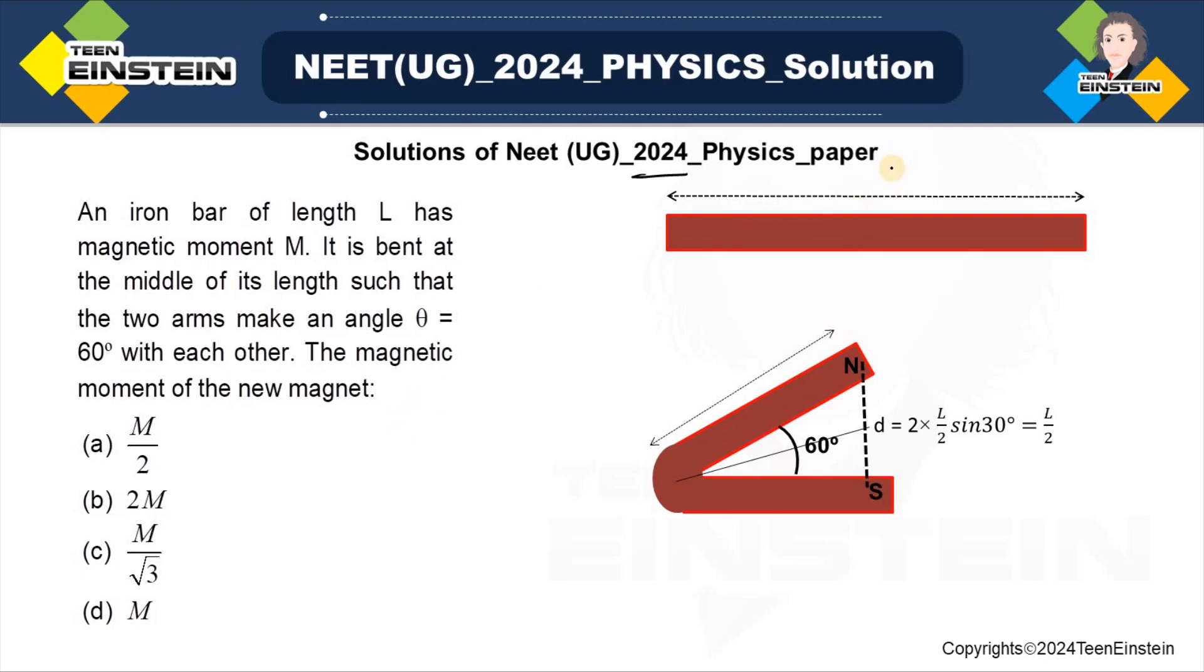So, suppose this is the iron bar having length L, and if I say the magnetic pole strength is small m which are situated at the ends of this bar, that means the distance between this pole strength is L. Therefore, we can write the magnetic moment of this bar as the magnitude of the pole strength into the distance between them.